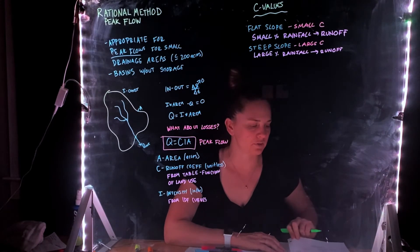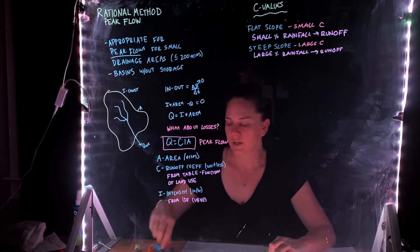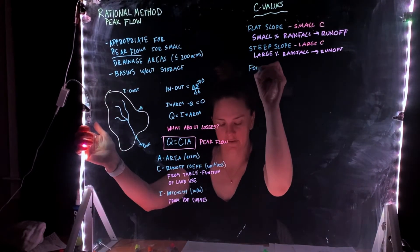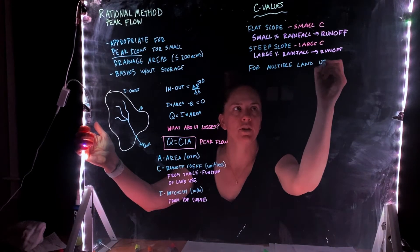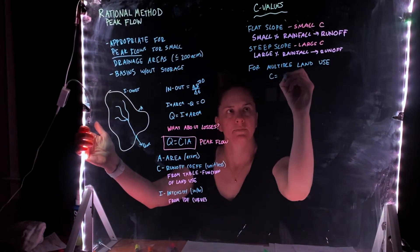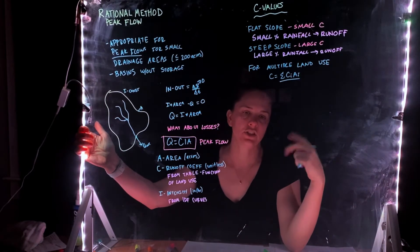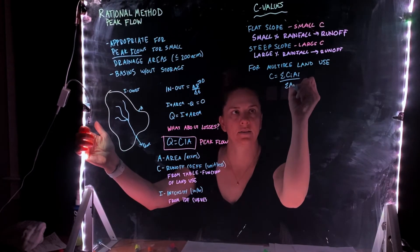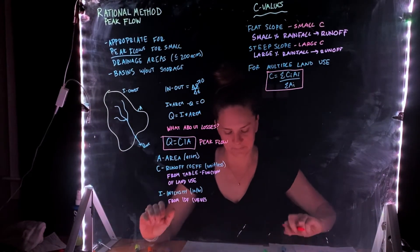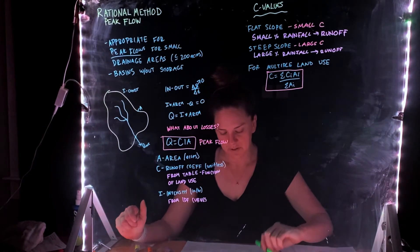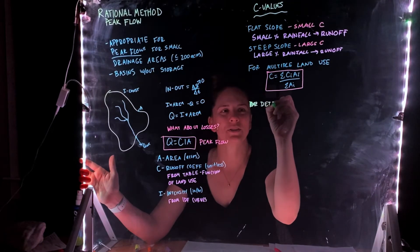We can keep this in mind as water resource engineers so that we can try and figure out how to reduce that peak discharge. We can use this if we have the situation where we might have multiple land uses. Similarly to what we did with the curve number, we can calculate a composite coefficient, and it's going to be equal to the sum of each coefficient for the area of land that it represents divided by the total area.